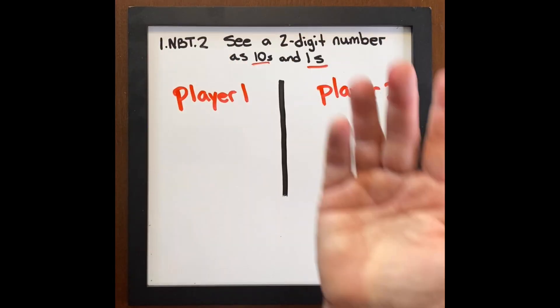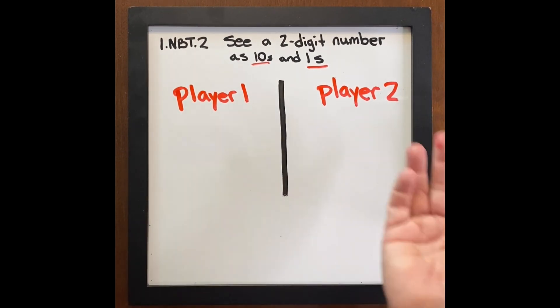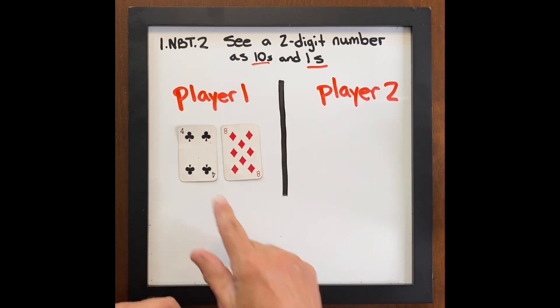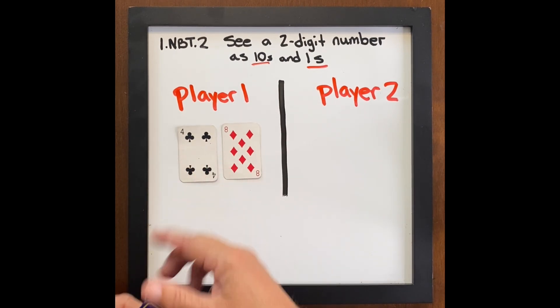Now you can play to 10 points, 20 points. You can play for a set amount of time. It doesn't matter. The purpose of this is for students to be using that language, four tens, eight ones for 48.